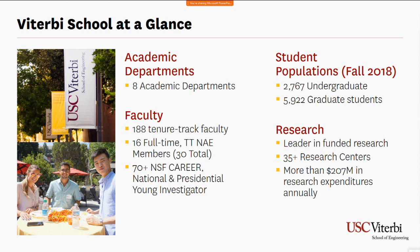Specifically about the Viterbi School: we are comprised of eight academic departments, and each of our master's degrees, graduate certificates, and PhD programs are housed within one of these eight departments — one of which is our industrial and systems engineering department. We have over 5,900 graduate students, and our graduate population well outnumbers our undergraduate population. We have 188 tenure track faculty members and a total of 30 National Academy of Engineering members.